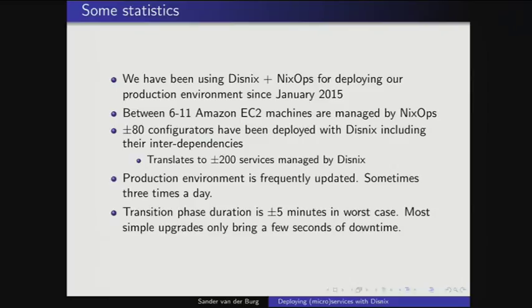We've been using Disnix and Nixops since January, managing between 6 and 11 Amazon EC2 instances. We've deployed over 80 configurators with Disnix, and counting all interdependencies, that means more than 200 services managed by Disnix. We update the production environment quite a lot — sometimes three times a day. Some enterprises are afraid to upgrade once a month, and we can do it three times a day. The transition phase where old services are deactivated and new ones activated takes at most five minutes of downtime.